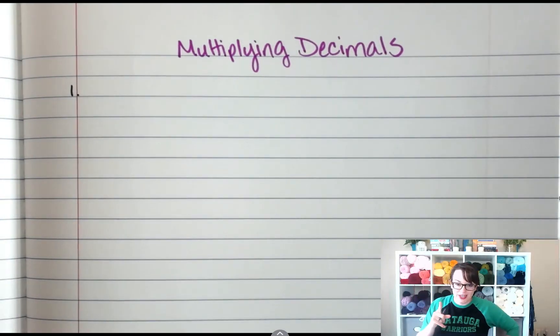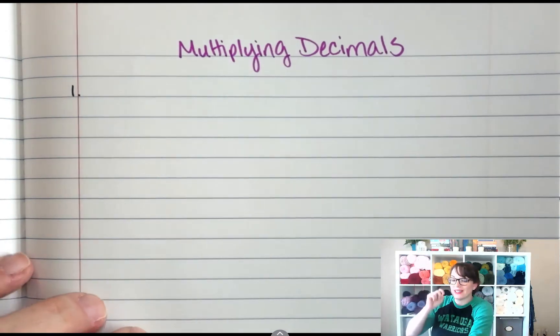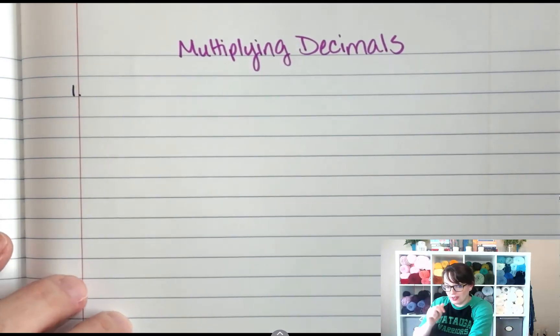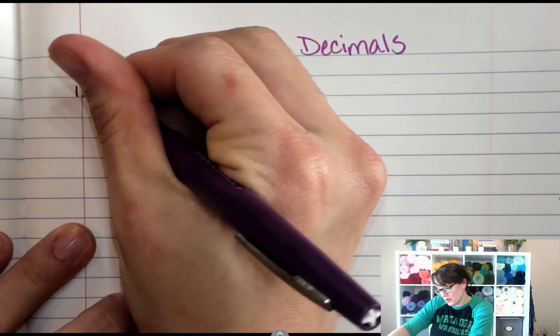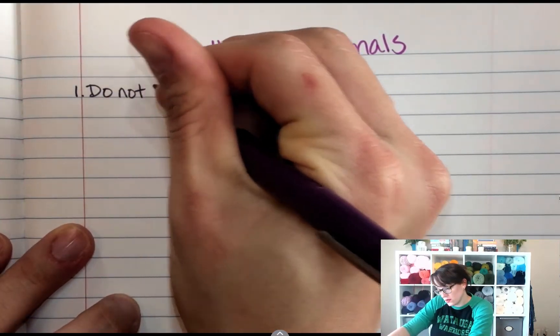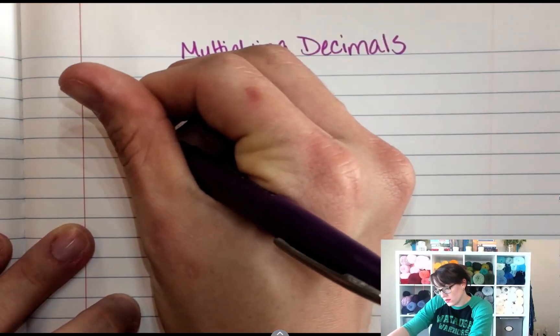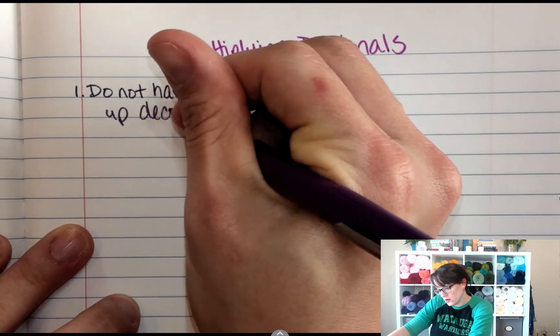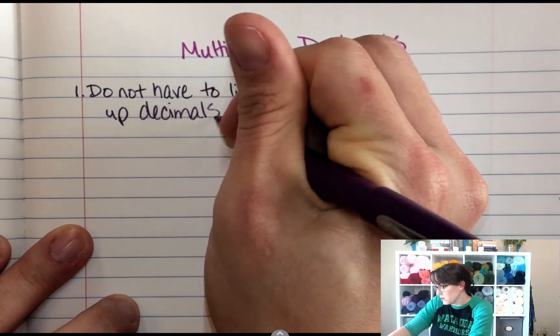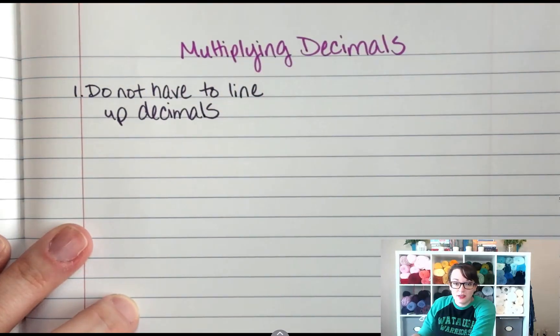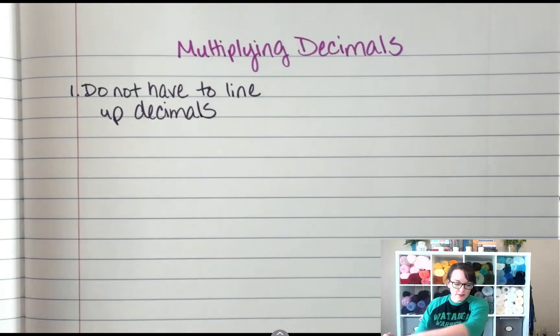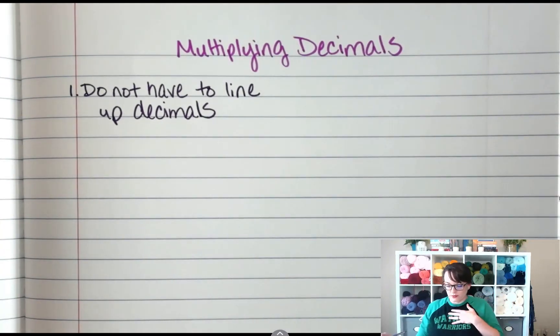So the biggest question I get asked is do I have to line up the decimals? And the answer is no, you do not have to line up the decimals. You can, it just means more work. So it's up to you, but I don't recommend it. Alright, so we're going to do an example.